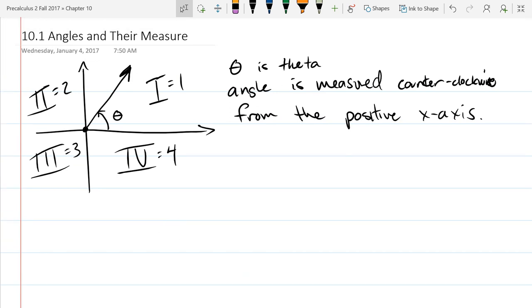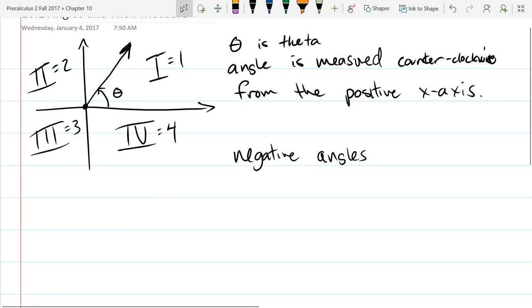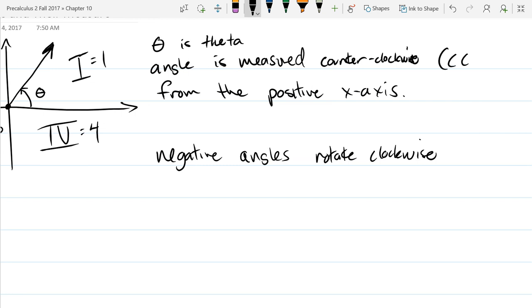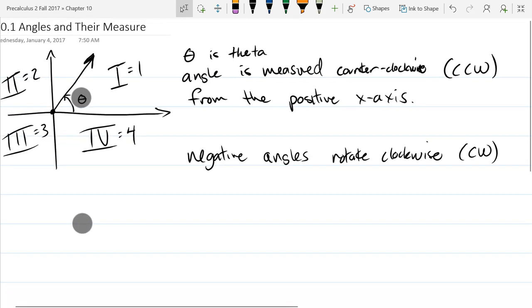So we measure angles counterclockwise. Now let's talk about negative angles. So negative angles, the way they're going to spin is clockwise. So positive angles go counterclockwise, negative angles are going to go clockwise. Counterclockwise is too much to write, so we're going to write CCW and CW for clockwise.